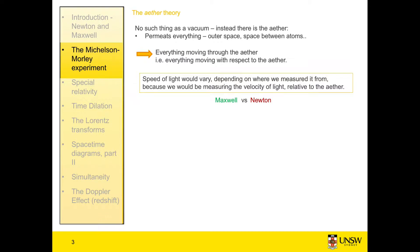That meant it was no longer Maxwell versus Newton — we could get Maxwell and Newton's theories to agree, and so everything was right with the world. More importantly, it gave us a way that we could test it: we could test to see whether Maxwell, Newton, or both were correct.